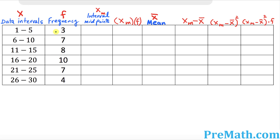The very first column in the table is our given data intervals, as you can see, along with their frequency. Now we want to find the interval midpoints. What we're going to do is add the two boundary numbers up and divide by 2.